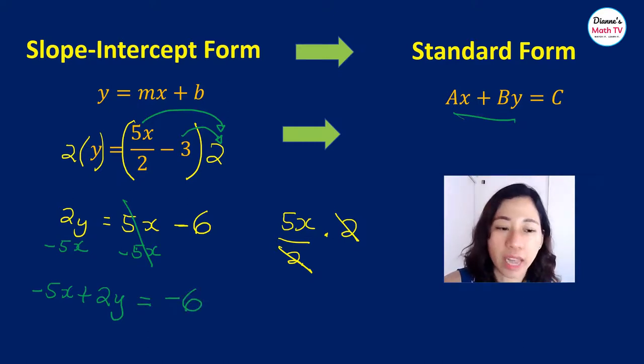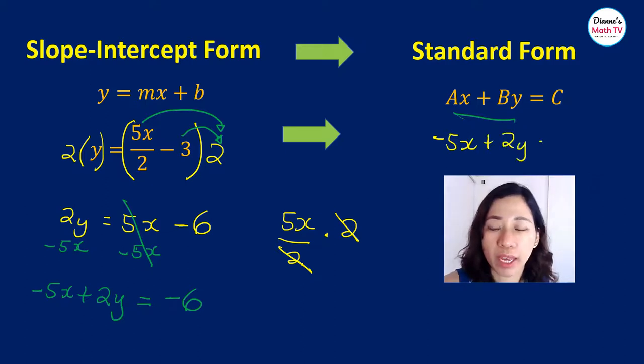This is negative 5x plus 2y equals negative 6. So there you go, that is our standard form. Negative 5x plus 2y equals negative 6.